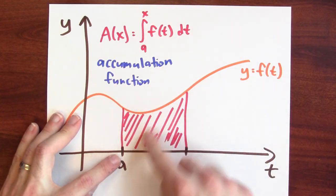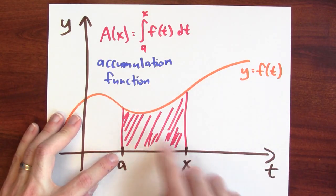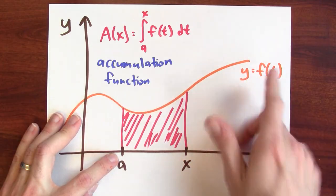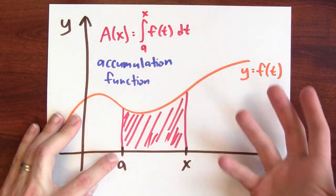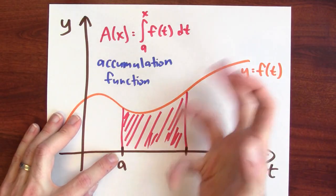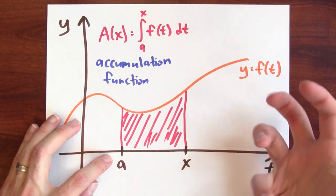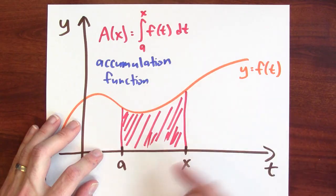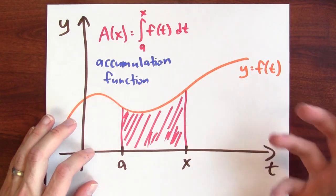So it computes the area between a and x under the graph of this function. And it's called the accumulation function because as I move x to the side, I'm accumulating more and more area. I'm determining how much area I've accumulated between a and whatever I plug into the accumulation function.